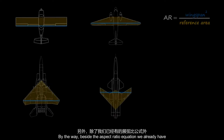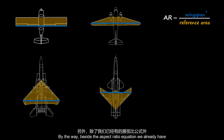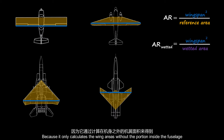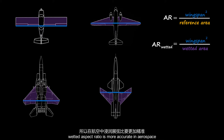Besides the aspect ratio equation we already have, there's another equation called wetted aspect ratio. Because it only calculates the wing area without the portion inside the fuselage, wetted aspect ratio is more accurate in aerospace.